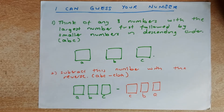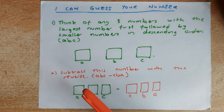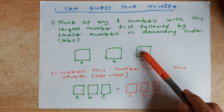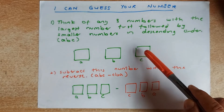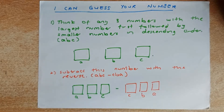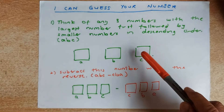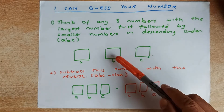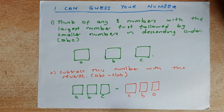Once you have chosen your three numbers, we're going to do step number 2. I want you to subtract this number with the reverse of that number. So for example, if it was 321, you're going to minus the reverse, 123. If it was 741, you're going to minus 147. So that is the second step. Hope you get it so far.